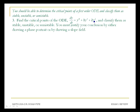On to number 3. It says find the critical points of the ODE dy/dt equals y to the 4th plus 3y to the 3rd plus 2y squared and classify them as stable, unstable, or semi-stable.